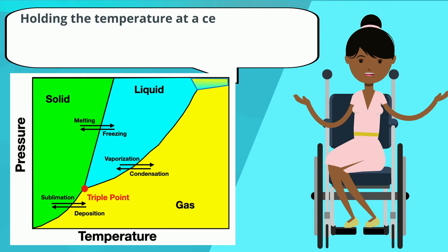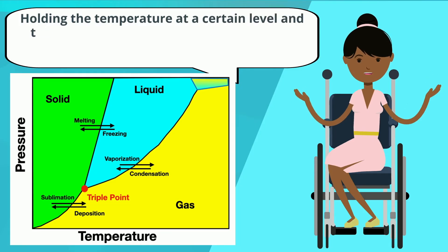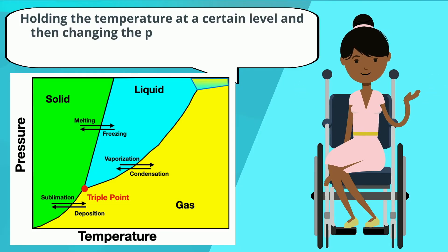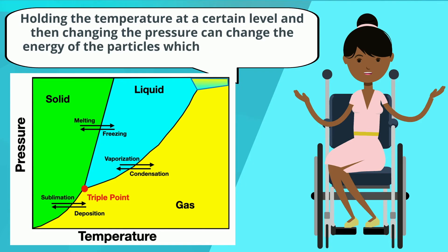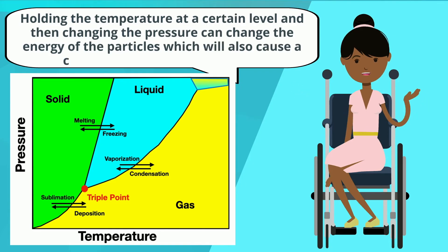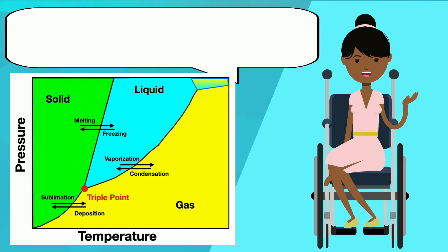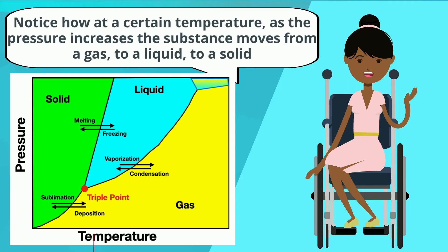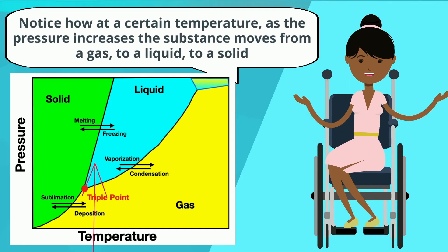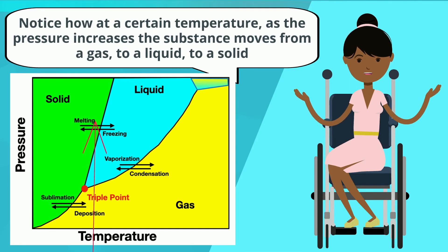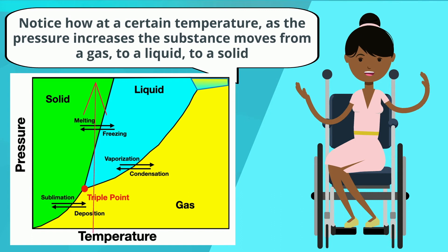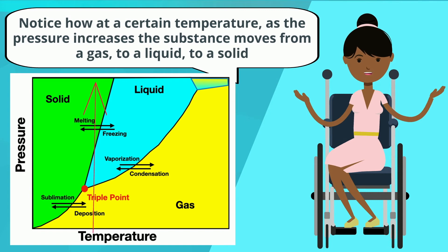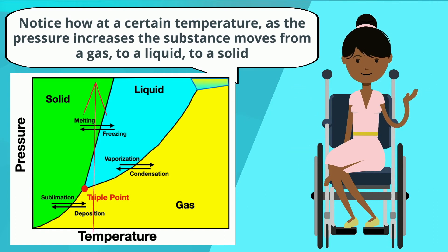Holding the temperature at a certain level and then changing the pressure can change the energy of the particles, which will also cause a change in the state of the substance. Notice how at a certain temperature, as the pressure increases, the substance moves from a gas to a liquid to a solid.